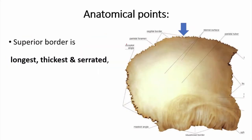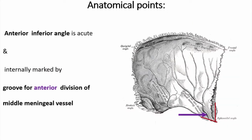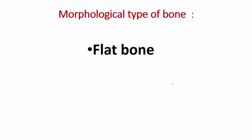First, the anatomical points. The superior border is the longest, thickest, and serrated. It lies in the median plane. The external surface is convex and directed upward and outward. The anterior inferior angle is acute and internally marked by a groove for the anterior division of the middle meningeal vessels. This is the location of the groove for the posterior division of middle meningeal vessels. Morphological type: it is a flat bone.